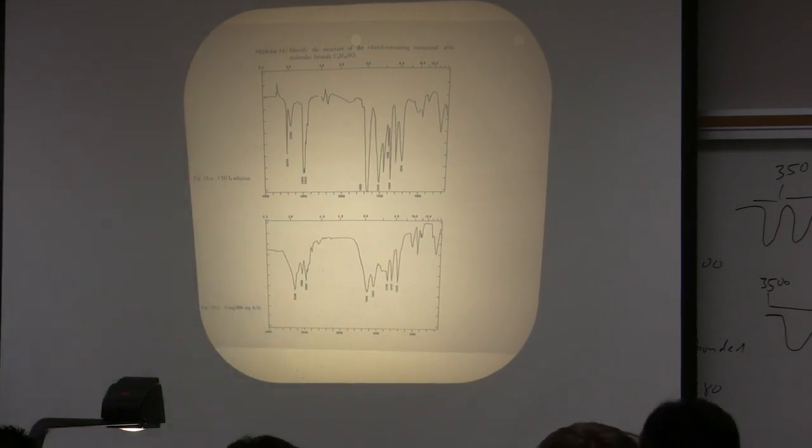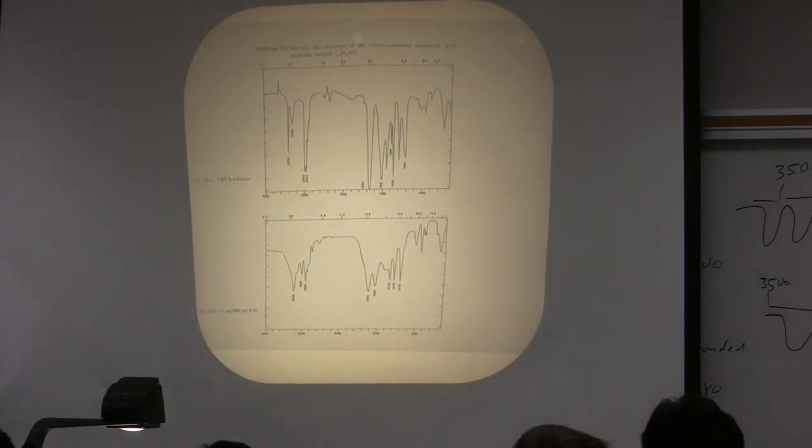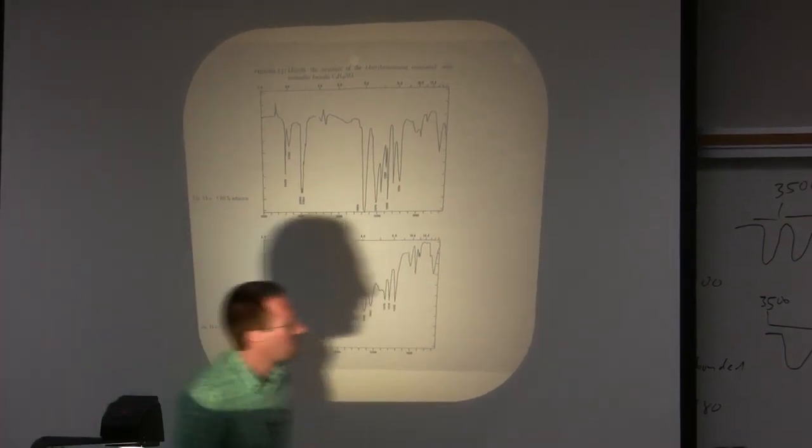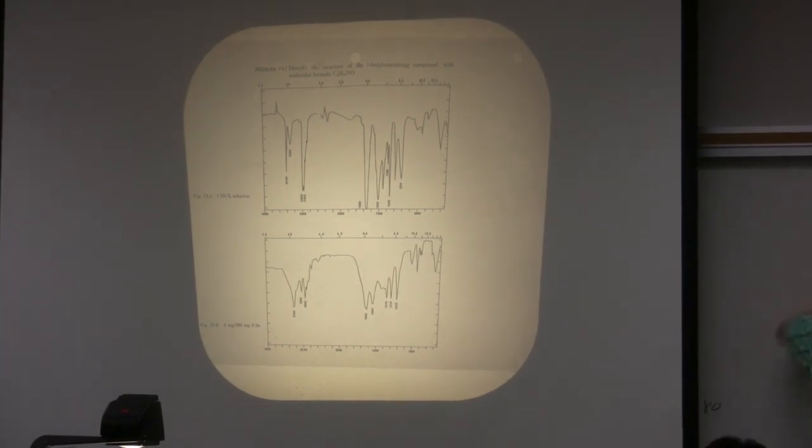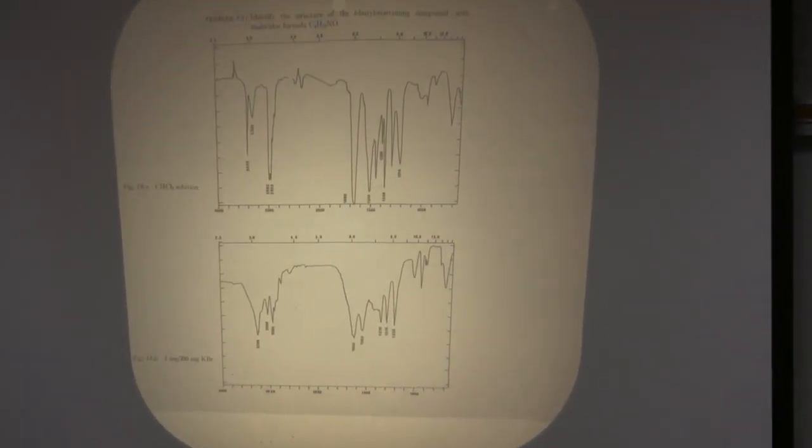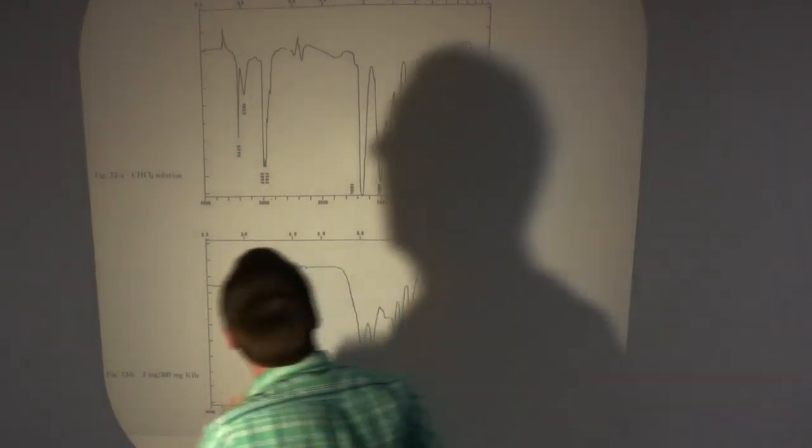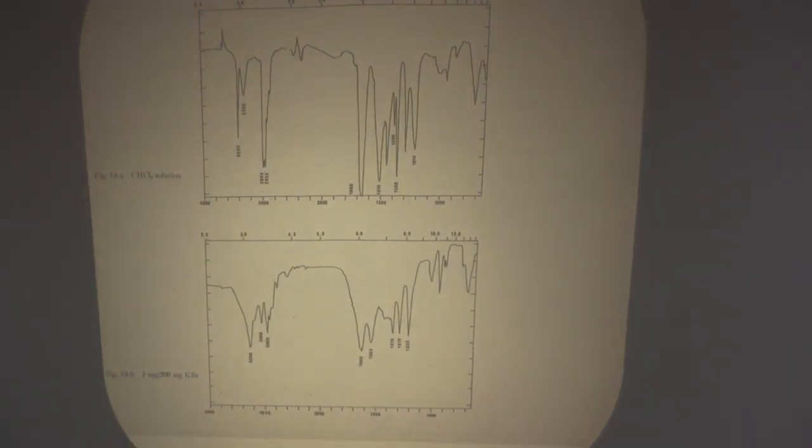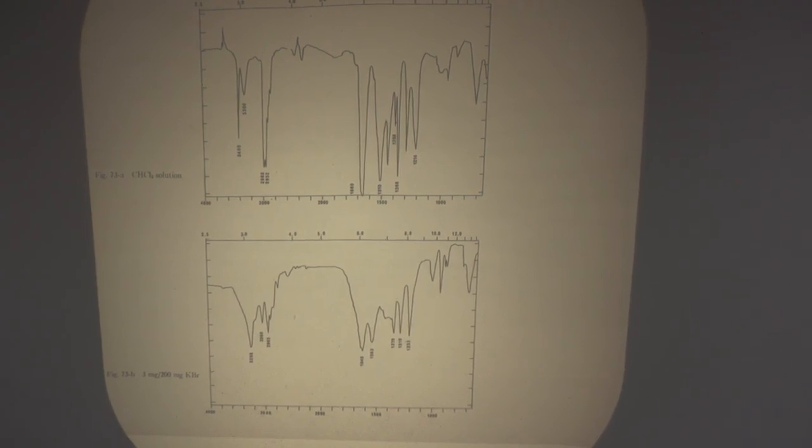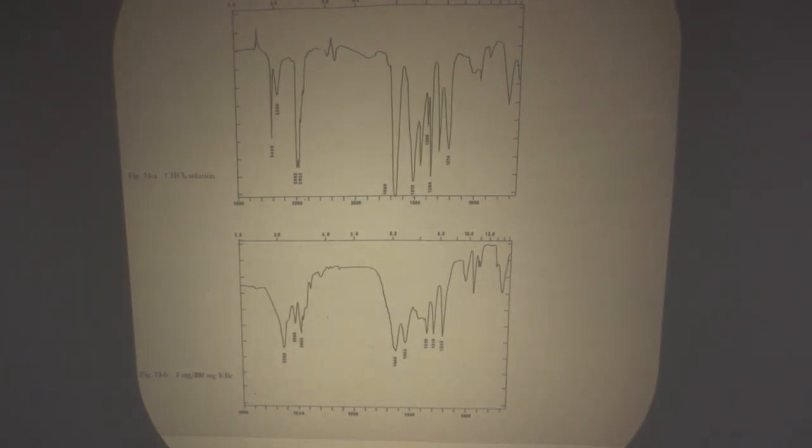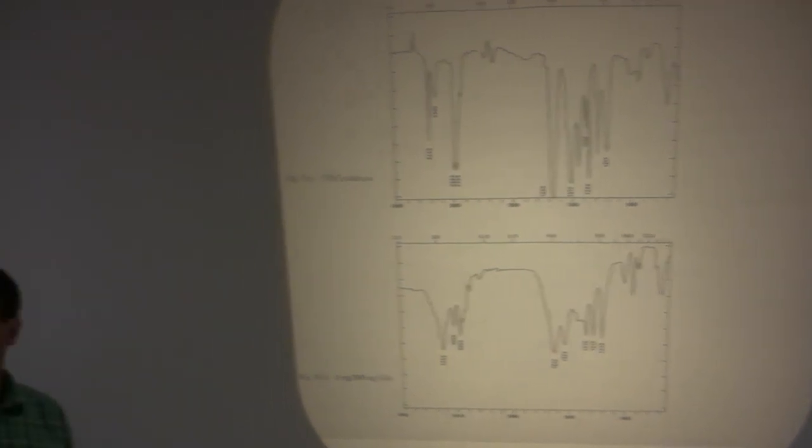This might also be a nice time for a little bit of a question here. We're on the subject of amides so we know we have an amide here. Problem here, this was taken from a book. The problem says we have a compound with a molecular formula C6H13NO and it contains the tert-butyl group. Can we figure out the structure of this compound?